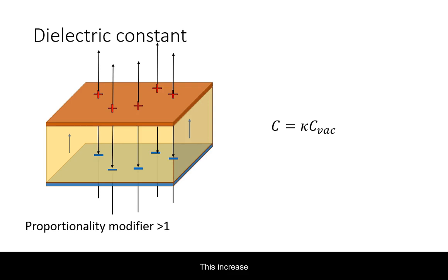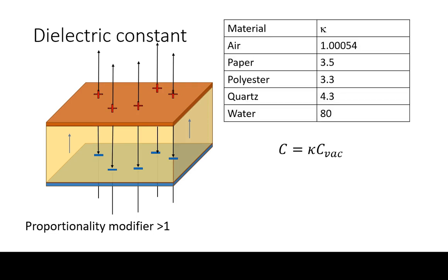This increase in charge buildup and hence capacitance is described by the proportionality modifier of the capacitor. This is a number greater than 1 and depends on the particular properties of the material involved.